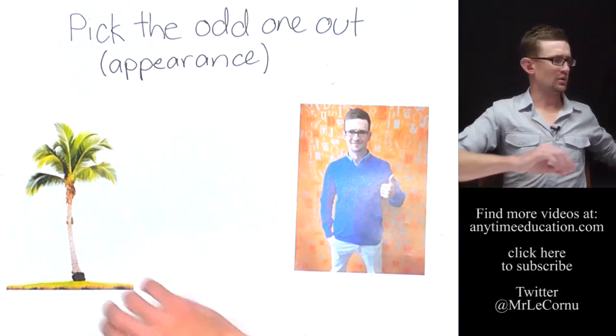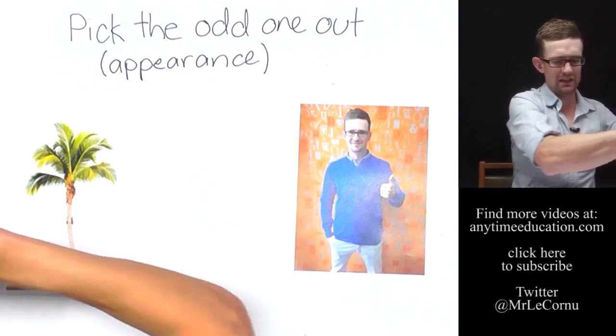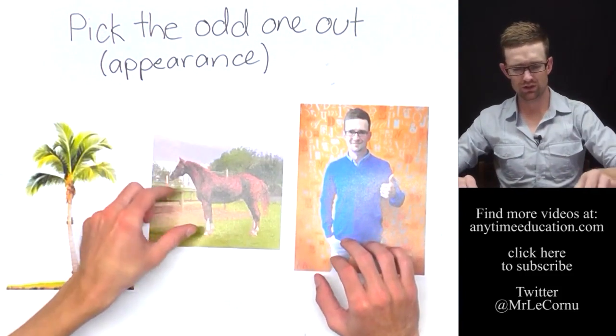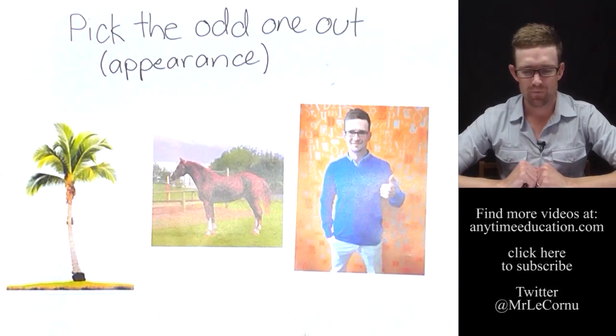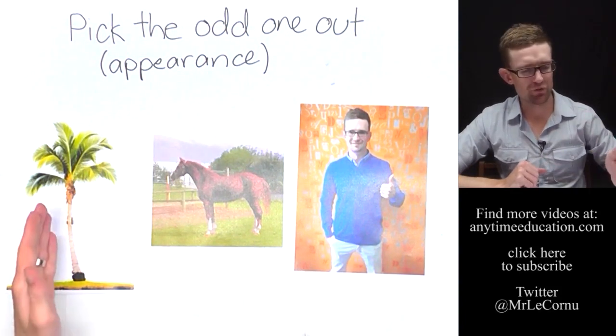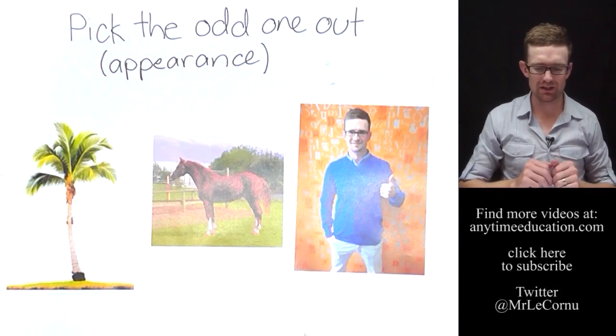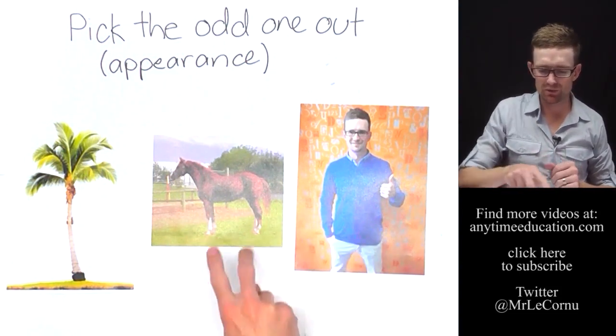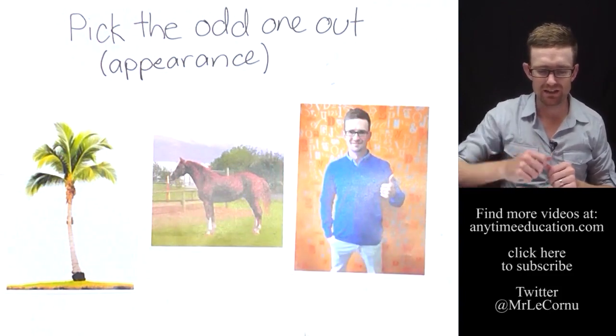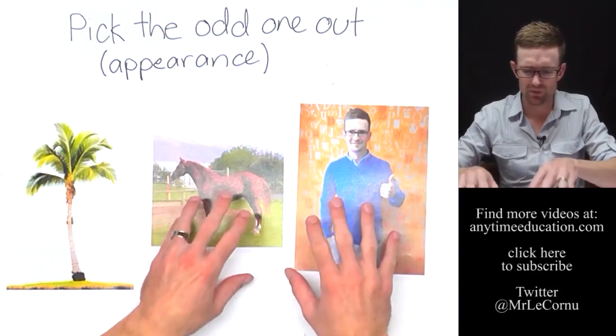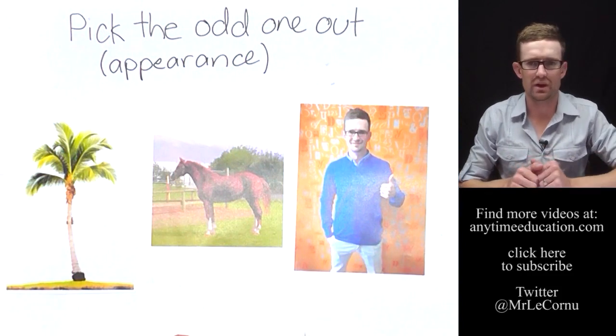Alright, what about palm tree, horse, human? Now we'd go for palm tree as the odd one out because we're still looking at limbs and things like eyes and ears and a lot more common features between these two than with the palm tree.